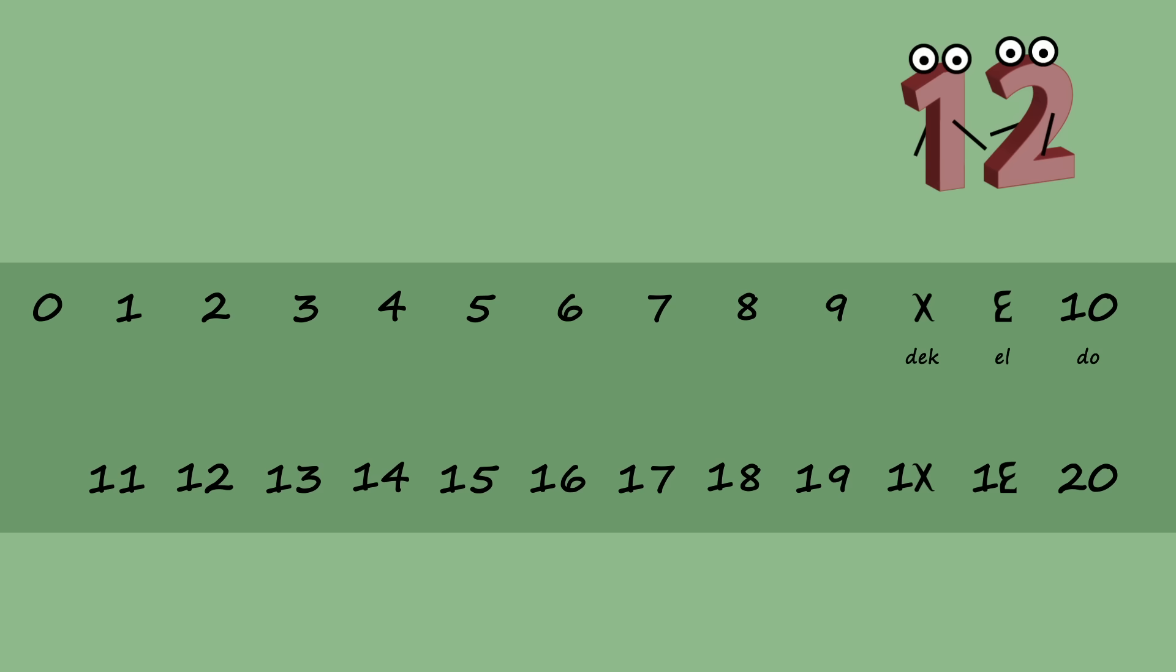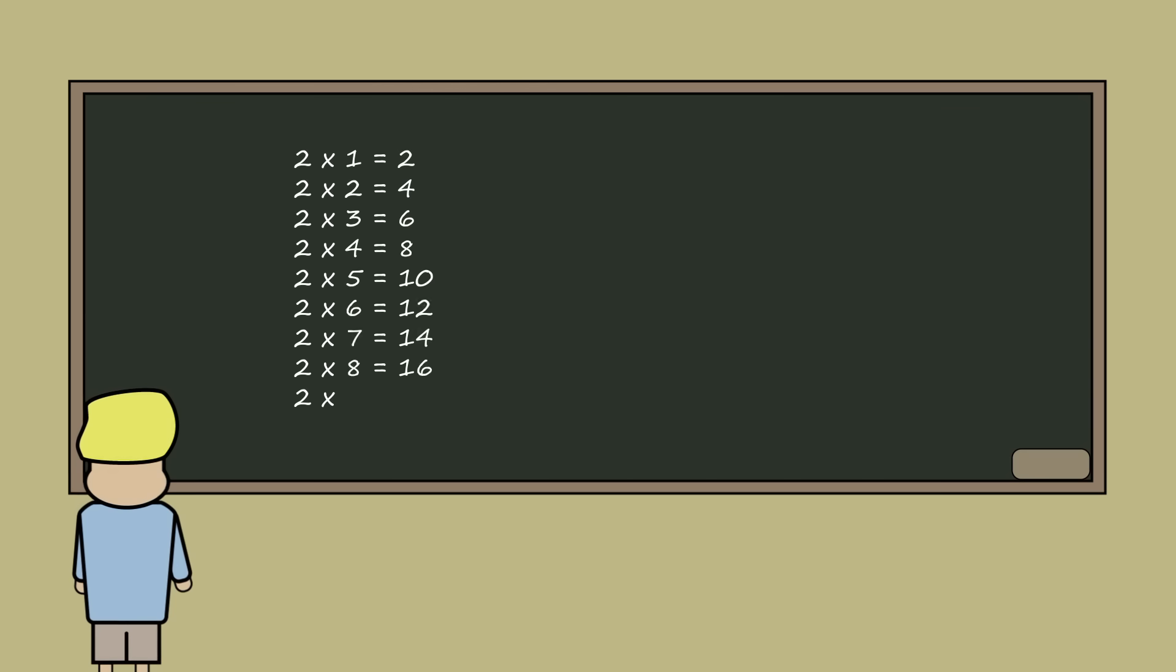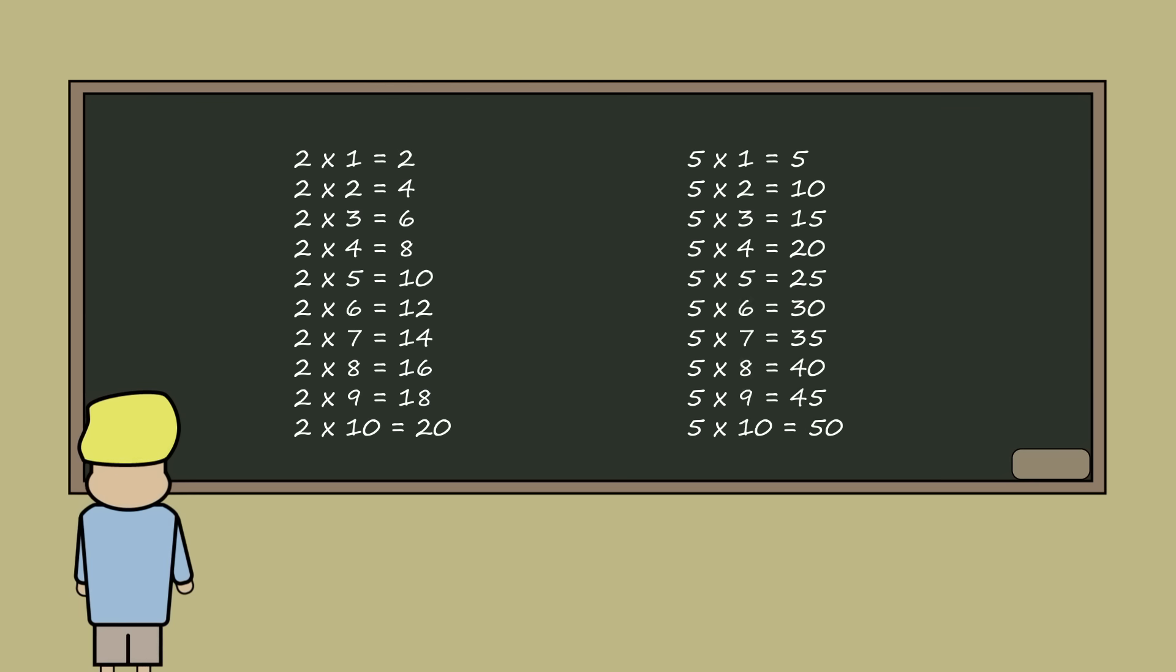Although serious mathematics would not change, base 12 would make our everyday use of mathematics much easier. For example, learning multiplication as a child can be a difficult and arduous task. The easiest times tables to learn in any base system are the ones of numbers that divide that base. So in base 10, the 2 and 5 times tables are the easiest to learn because they are just the even numbers and the numbers ending in 5 or 0.